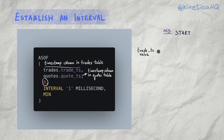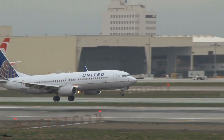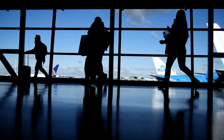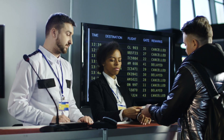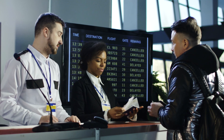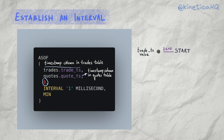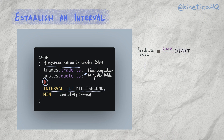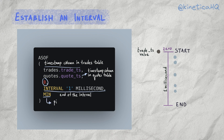Negative values would indicate that the interval starts before the value in the left side table, while a positive value would indicate that it starts after. A good example for a delayed start to an interval would be matching arriving flights at an airport with departing flights so that passengers can make connections — in this scenario we would want the interval to start quite a while after the arrival time so passengers have enough time to walk to departure gates. The next argument specifies the end of the interval, so for this query the search interval ends one millisecond after the trade timestamp value. The final argument is either min or max, dictating which record to pick from the right side table when there are multiple matches. In our case we have min, which means we pick the value with the minimum timestamp — the one closest to the value on the trades table within each interval.